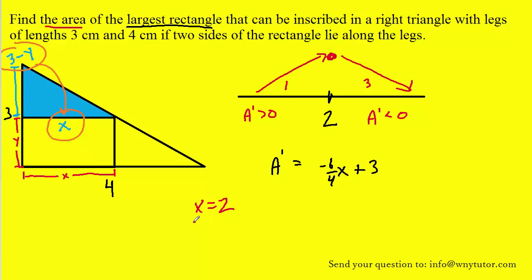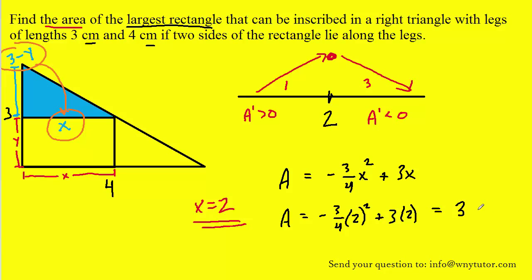Now, the question said to actually find that area. So let's go ahead and take x equals 2 and plug it into the area formula. Recall that the area of the rectangle was given by this formula here, so all we'll do is plug 2 in. And when we do that, we get a result of 3. Now, since the measurements were in centimeters, the area would be in centimeters squared. And that is, indeed, the correct answer.